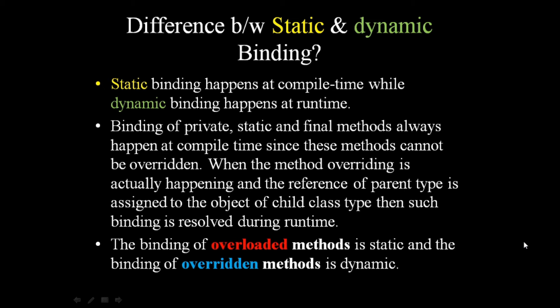When method overriding is happening and the reference of a parent type is assigned to the object of a child class type, such binding is resolved during runtime. The last difference: the binding of overloaded methods is static, and the binding of overridden methods is dynamic.